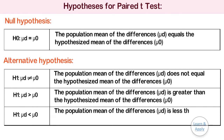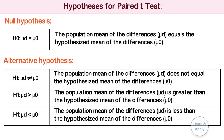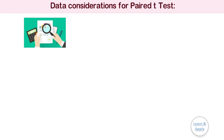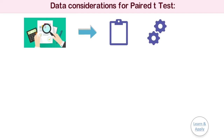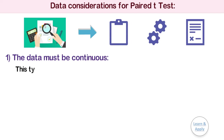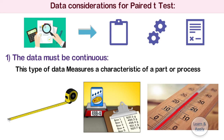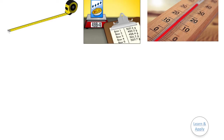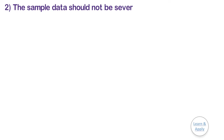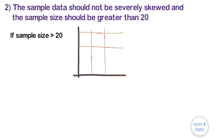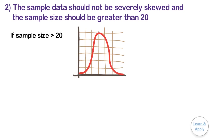Data considerations for paired t-test: to ensure that your results are valid, consider the following guidelines when you collect the data, perform the analysis, and interpret your results. 1. The data must be continuous — this type of data measures a characteristic of a part or process such as length, weight, or temperature. The data often includes fractional or decimal values. 2. The sample data should not be severely skewed and the sample size should be equal to or greater than 20. If your sample size is greater than 20 and the underlying distribution is unimodal and continuous, then the hypothesis test performs appropriately, even if the data is mildly skewed.